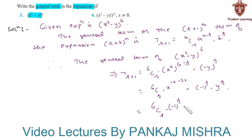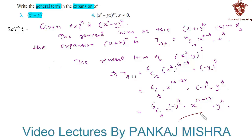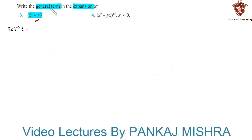This is further equal to 6Cr × (-1)^r × x^(12-2r) × y^r. Hence, this is the general term of the expansion of (x² - y)⁶.